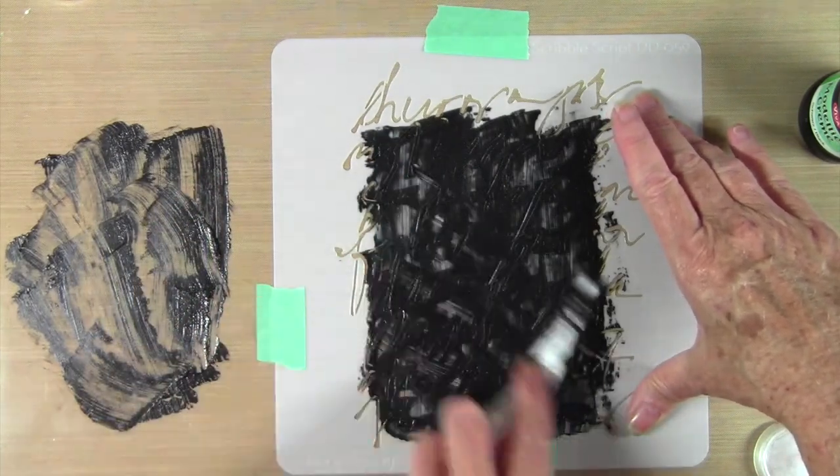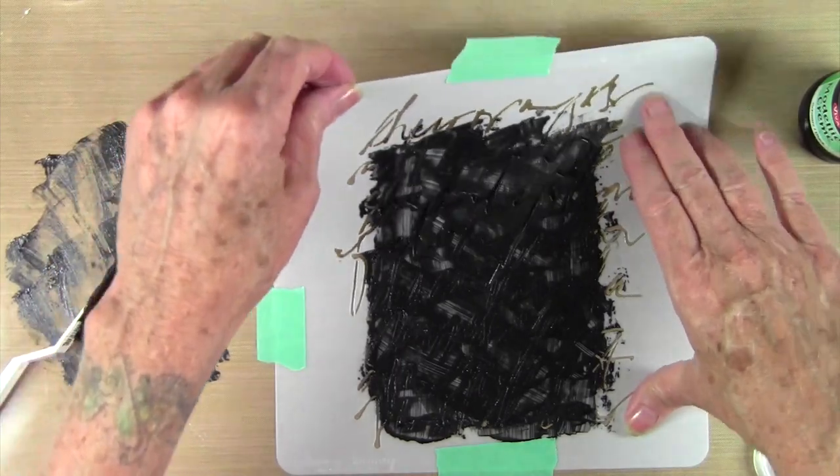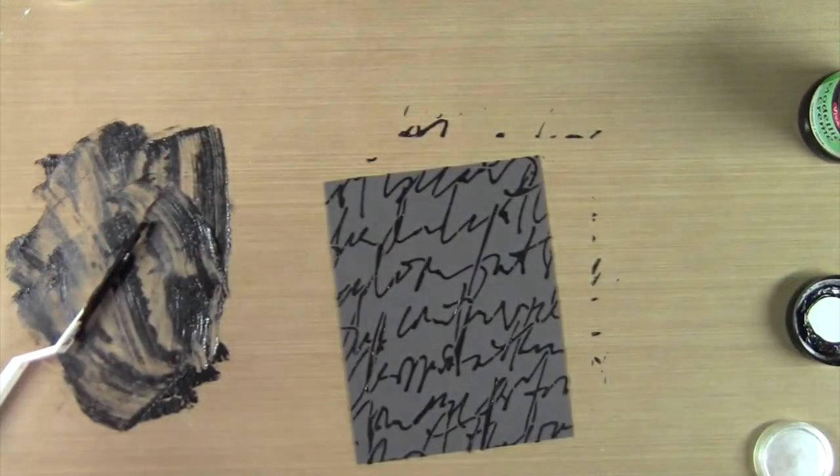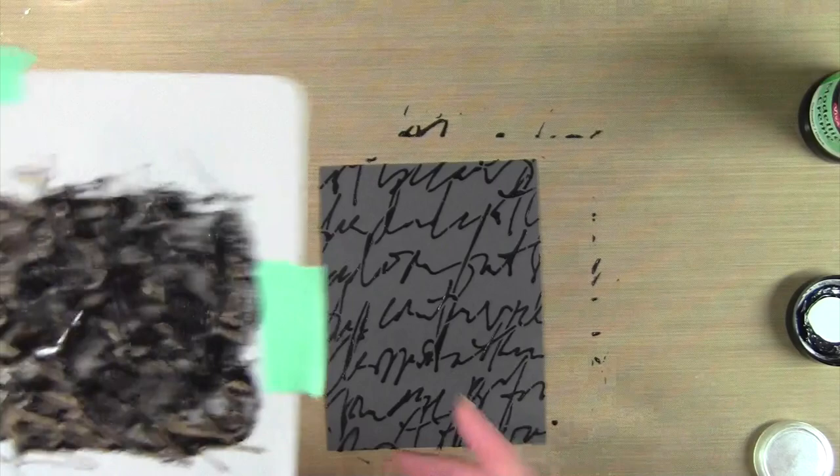To finish up, I used the edge of my palette knife to smooth over, and now I can peel this off. And I have to say that this paste is absolutely beautiful, but what you really need to do is to wash your stencil right away.